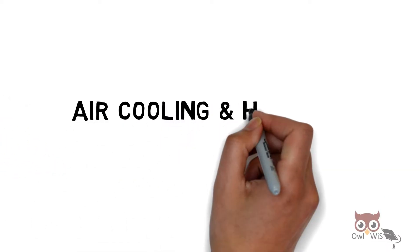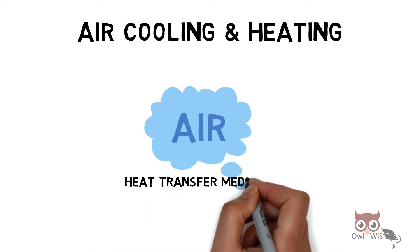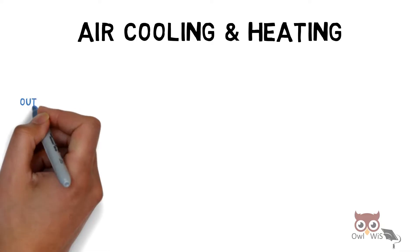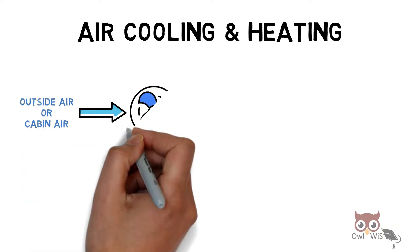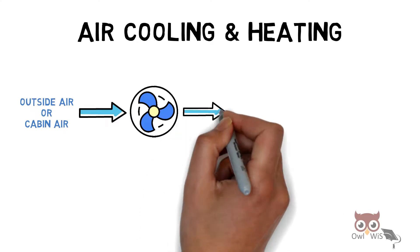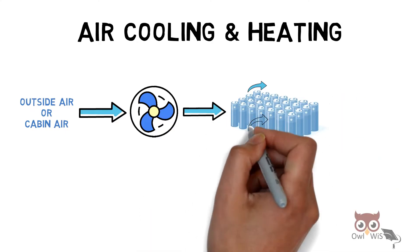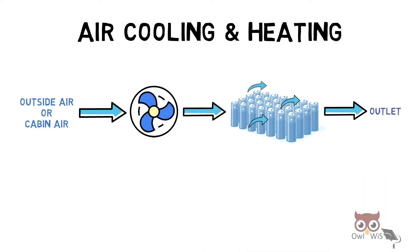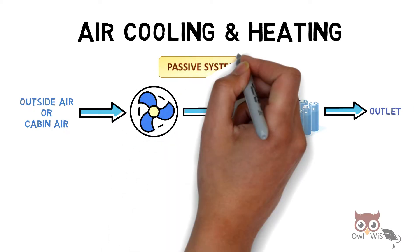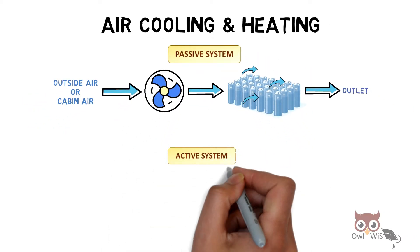Air cooling and heating uses air as the heat transfer medium. Outside air or cabin air is taken in through the blower, which is then passed through the battery pack. The air passes through the battery pack and taken out through the outlet. This is known as passive system.